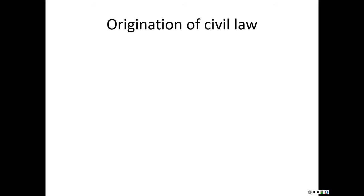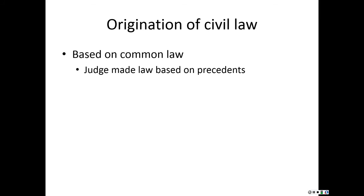Civil law is based on common law — judge-made law based on precedent. Precedent means the judge refers to prior judicial decisions to see how a similar item was handled and decided. You use this to help guide your current decision. You do not want to change precedent; you look for things that maintain consistency so we have a consistent and fair judicial system where everybody knows what to expect.